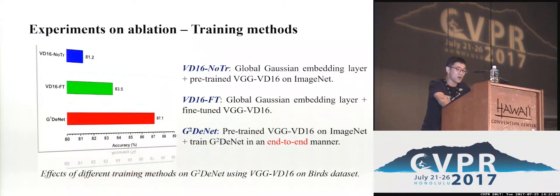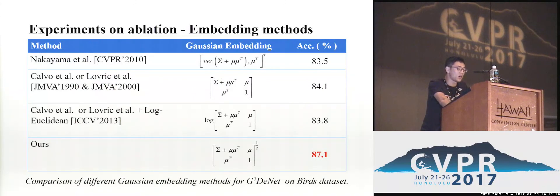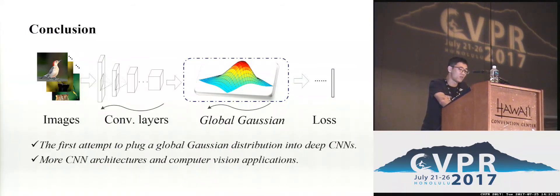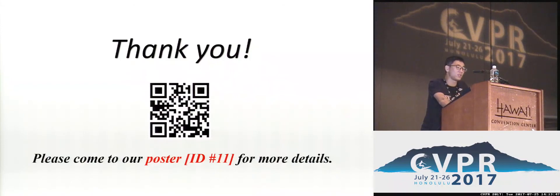In the final part of our experiments, we compare different training strategies for our network, including a pre-trained model without fine-tuning and an end-to-end learning manner. The results show that end-to-end learning is very important for our network. We also evaluate different Gaussian embedding methods with the same setting on the birds dataset, and our method outperforms other existing Gaussian embedding forms by a margin. In summary, we make the first attempt to plug a global Gaussian distribution into a deep CNN architecture in an end-to-end learning manner. We deploy a Gaussian embedding form based on group theory and develop a structured backpropagation method. In future work, we will apply our method to more architectures and other computer vision applications. Please come to our poster for more details. Thank you for your attention.